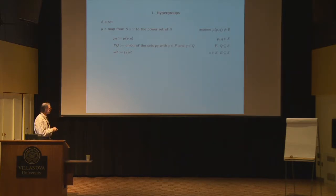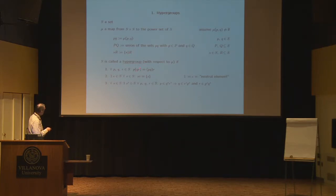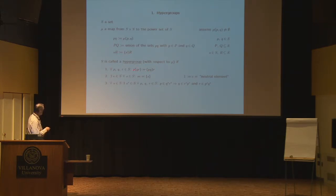If I write capital letters for two subsets P and Q of S, I mean the union of the products, like the complex product in group theory. An abbreviation is the product where one of the letters is a singleton, which then looks like a coset in group theory. This is called a hypergroup with respect to this hyperoperation μ (multiplication) if you have associativity — and to state associativity I need the product of a single element times a subset, which I define first.